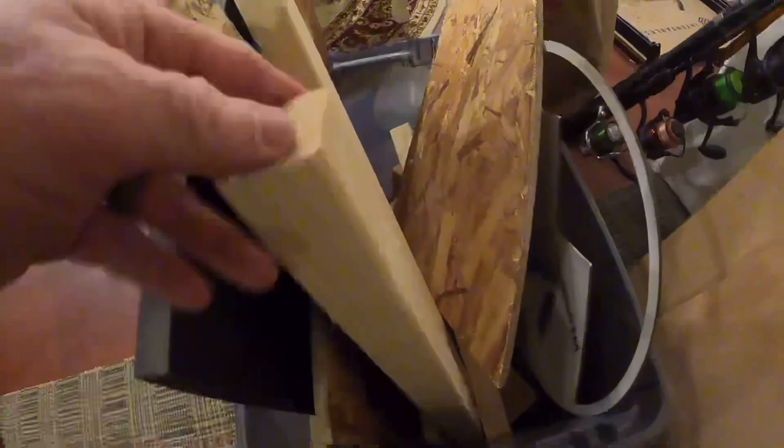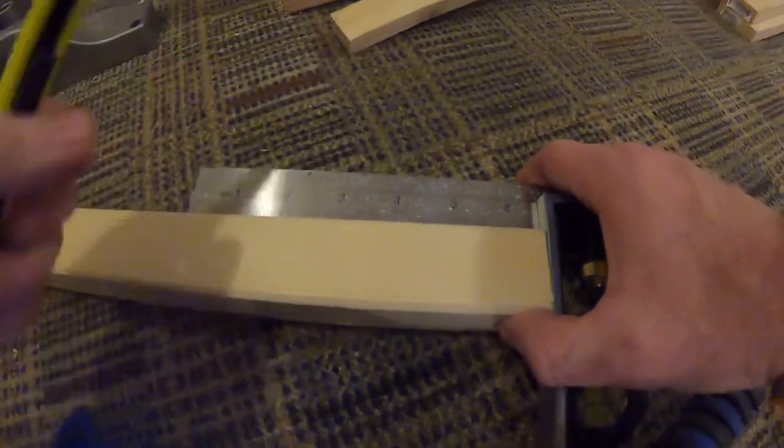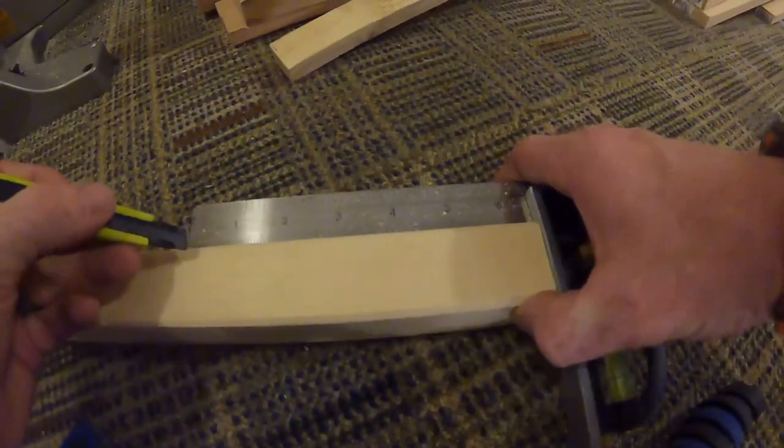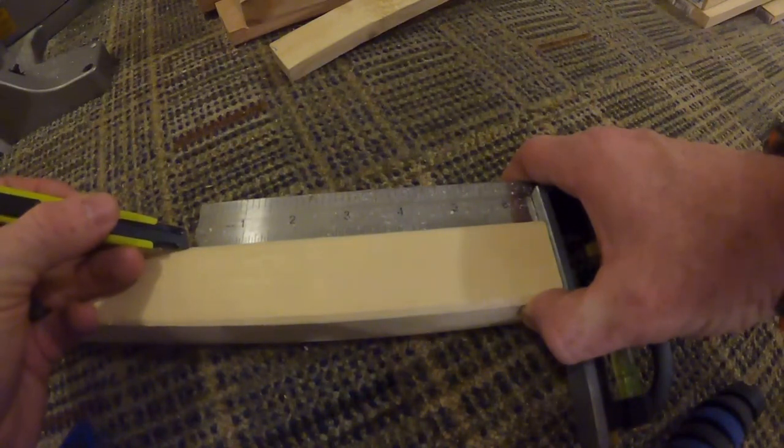First I'm going to grab a piece of 2x2 from my scrap wood pile. Once I get that 2x2, I'm going to measure over six and a half inches and put a mark there. Once I get that mark, I'll take it over to my miter saw and get it all set up.